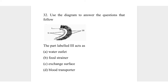Question 32. Use the diagram to answer the question that follows. The path labeled III acts as what? First, let us identify what each part is called. Part I is the gill arc, part II is the gill raker, and part III is the gill filament. The gill filament is where the exchange of oxygen takes place. So the correct answer is C, exchange surface.